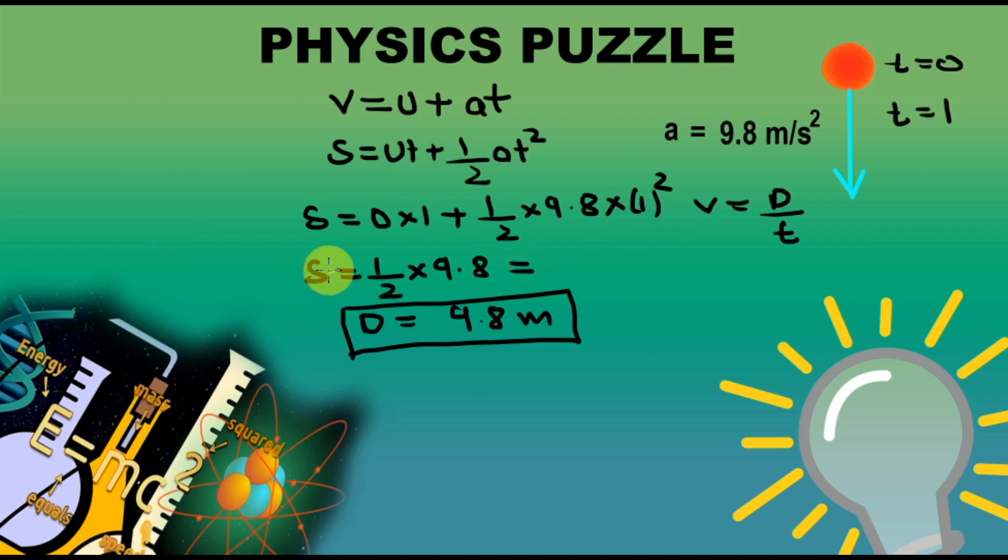Here distance traveled in 1 second is 4.9 meters, because 9.8 divided by 2 is 2 fours are 8, and 2 nines are 18, 4.9 meters, which is weird, because this is 9.8 meters, and this is 4.9 meters.